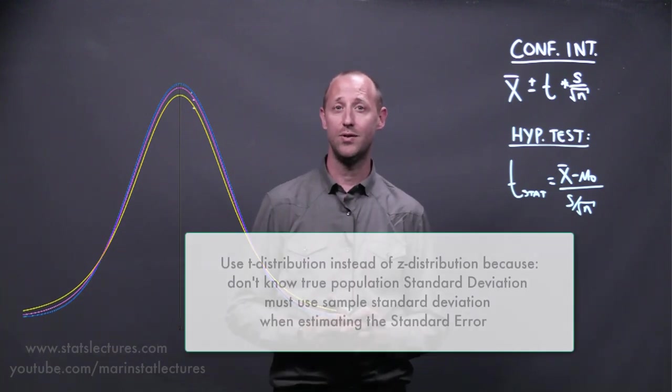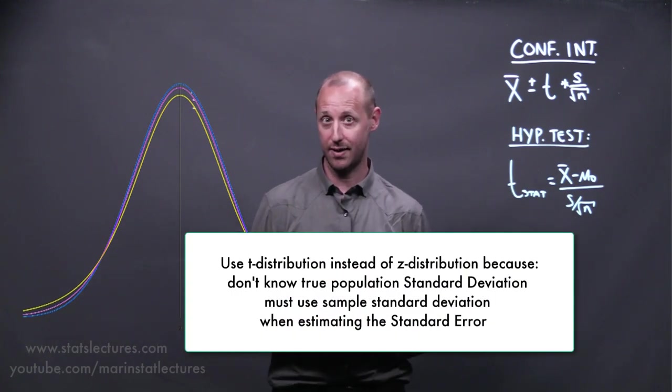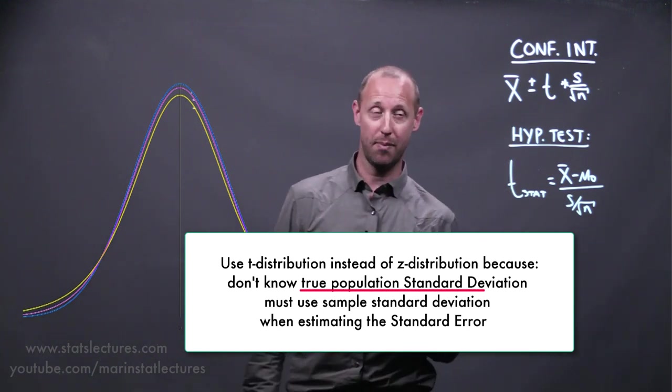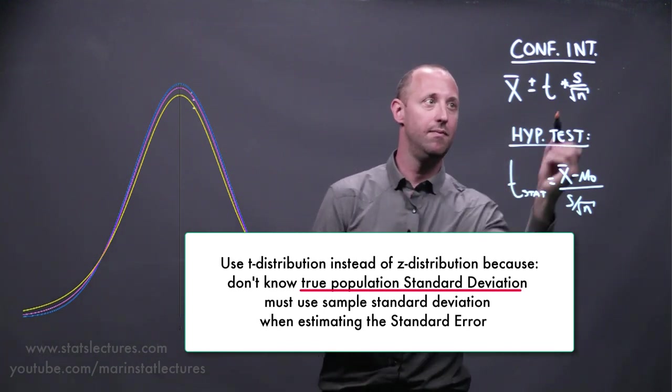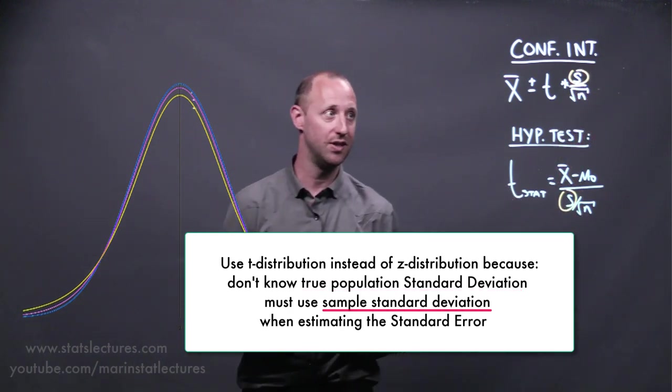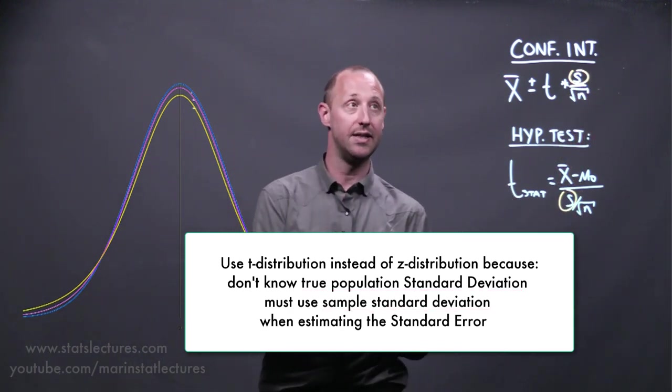We have to use the t-distribution instead of z because we don't actually know the true population standard deviation, so we have to use the sample standard deviation when estimating the standard error.